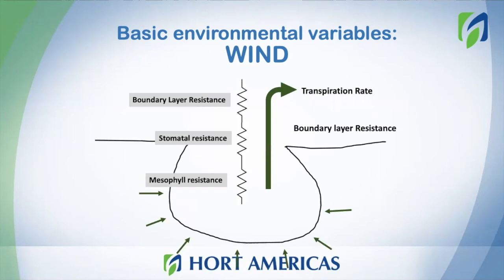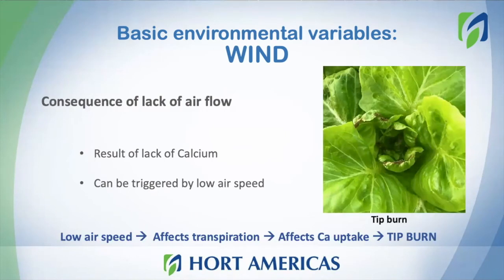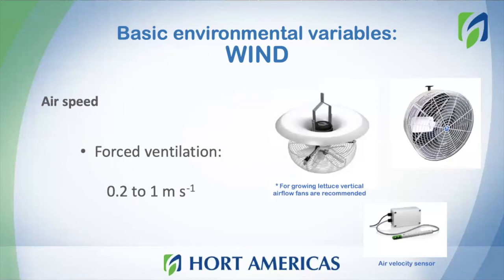It's very important to maintain the boundary layer resistance as small as possible, and we do this by ensuring good airflow. Without good airflow, you will have problems like tip burn, which is a very common problem inside of greenhouses, and when growing lettuce this problem is most often related to airflow. By keeping good airflow within your system, you can promote the plant to take up water, nutrients, and calcium, and avoid tip burn. The recommended levels for air speed inside of a growing system are 0.2 to 1 meters per second, and there are different fan options available.